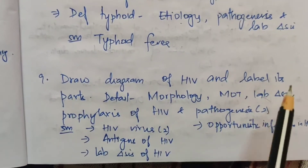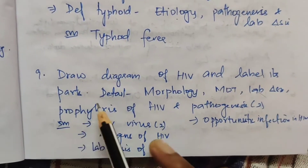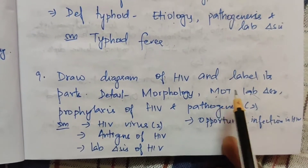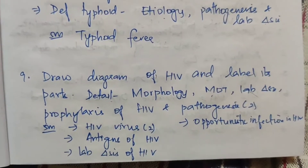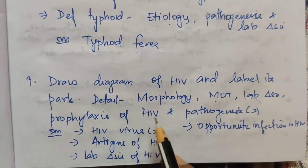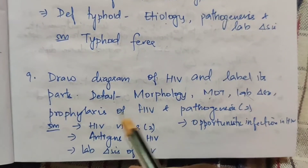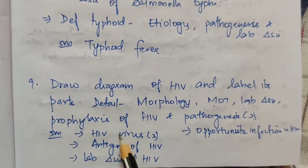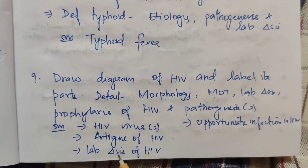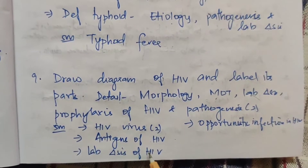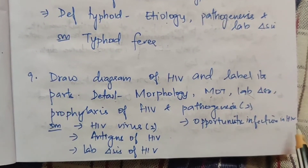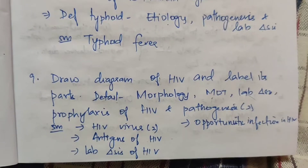The ninth topic is HIV. Draw a diagram of HIV and label its parts. Detail about morphology, mode of transmission, lab diagnosis, prophylaxis of HIV, and pathogenesis — this has appeared 2 times. For 5 marks: HIV virus has appeared 2 times, antigens of HIV, lab diagnosis of HIV, and opportunistic infections in HIV are all important.